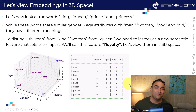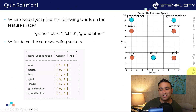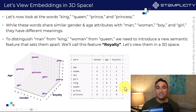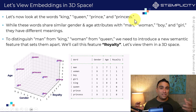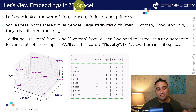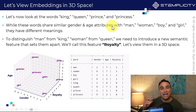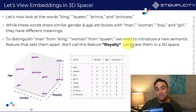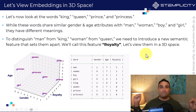What I could do next is represent this in a 3D space. What we've done so far was a 2D space because we only had two features. Now let's represent the words king, queen, prince, and princess. These words still share the same features — age and gender — but we need an additional feature: royalty. To distinguish 'man' from 'king' and 'woman' from 'queen', we introduce a new semantic feature called royalty, and add a third dimension to the space.